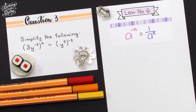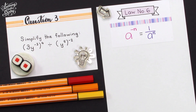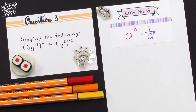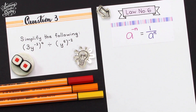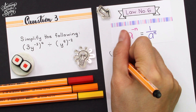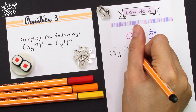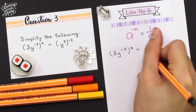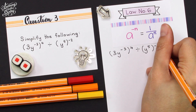For question number 3, simplify the following: 3y to the power of negative 3, holding in bracket to the power of 4, divided by y to the power of 5 holding in bracket to the power of negative 2. For this question, we are going to use negative indices again: a to the power of negative n equals 1 over a to the power of n. First of all, we're going to write down the question given.